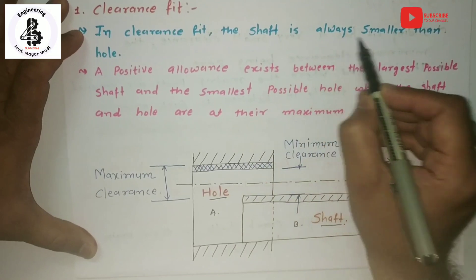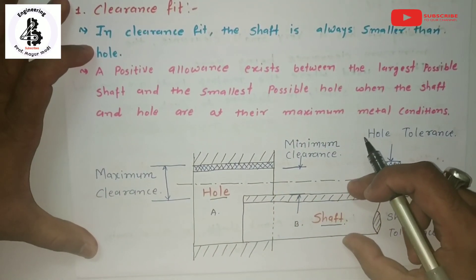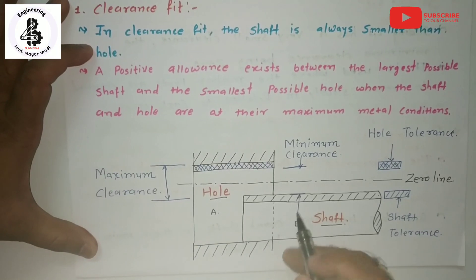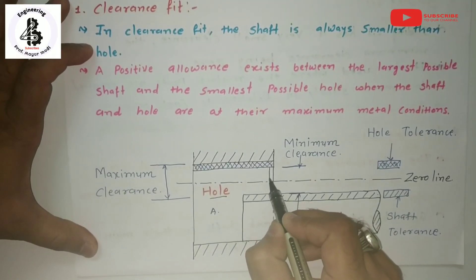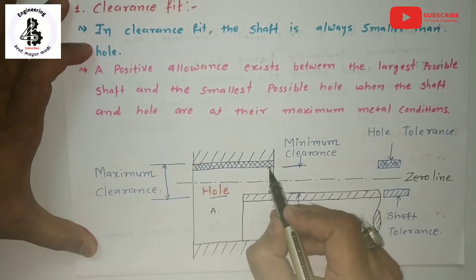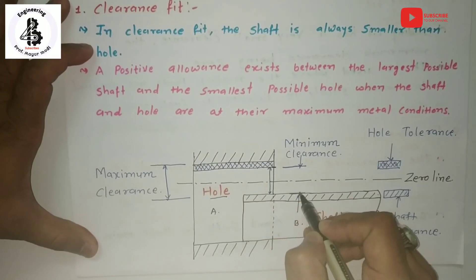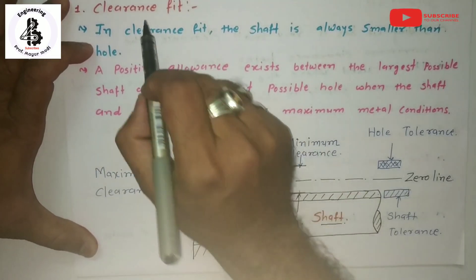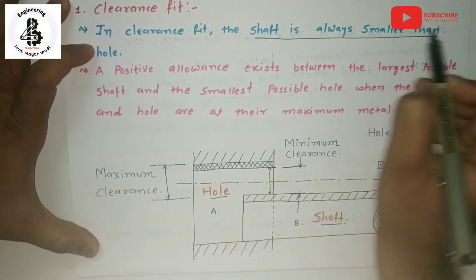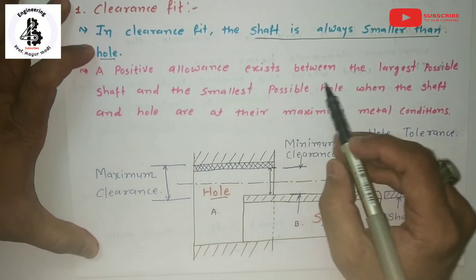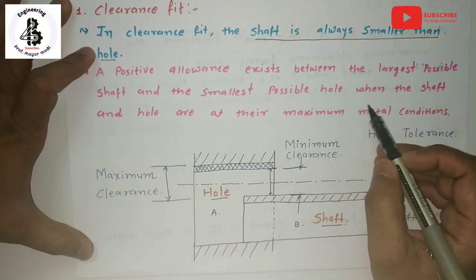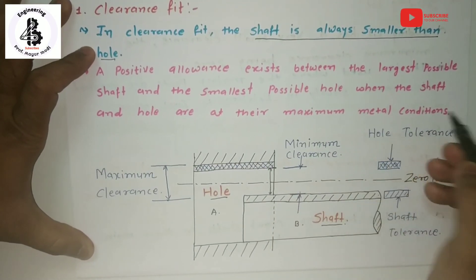For clearance fit, the shaft is always smaller than the hole — the size of the shaft is always smaller than the size of the hole, so there will always be some clearance. The necessary condition is that the shaft is always smaller than the hole, meaning a positive allowance exists between the largest possible shaft and the smallest possible hole when both are at their maximum metal conditions.